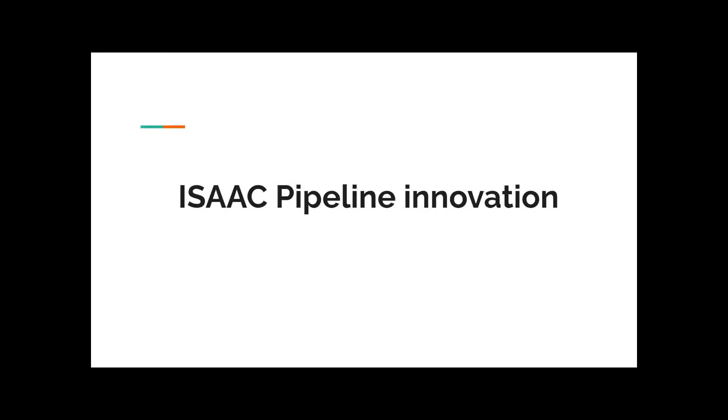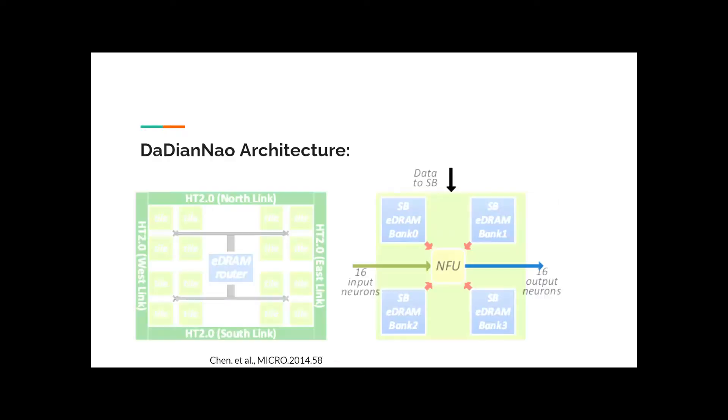This is Yihan Du, and I will talk about the innovation in ISAC pipeline. Let's first go back to the DaDianNao architecture, where the neural weights are equally distributed across the 16 tiles on the chip. And it does computation layer by layer. So, when the calculation of one layer is completed, its result is collected, and the input of next layer is drawn from the eDRAM router, and it starts the computation of second layer.